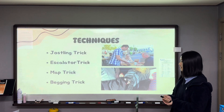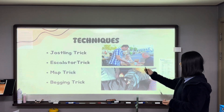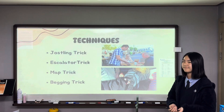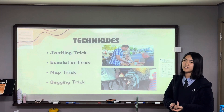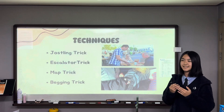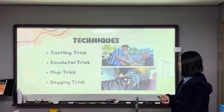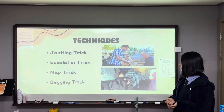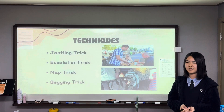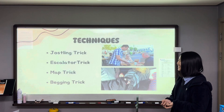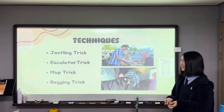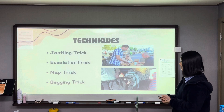Third, the map trick: the pickpocket approaches the victim, acts lost, and asks them to tell the route using a map. When the victim is distracted and orienting, they steal the purse unnoticed. Fourth, the begging trick: this trick is mainly carried out by children who pretend to be deaf or mute. The victim is met with a cardboard sign asking them for some money. When they reach into their bags to search for some change, the pickpocket takes the banknotes under the cardboard sign.